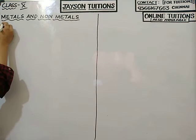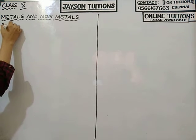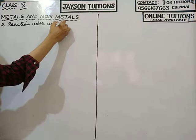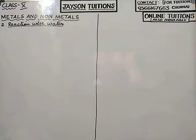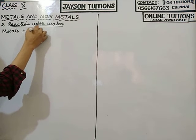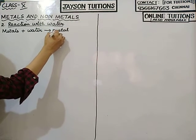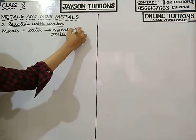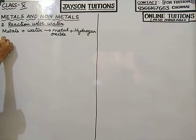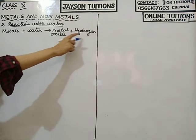Now we will study the second chemical property of metals: reaction with water. Metals will react with water to form metal oxide and hydrogen.